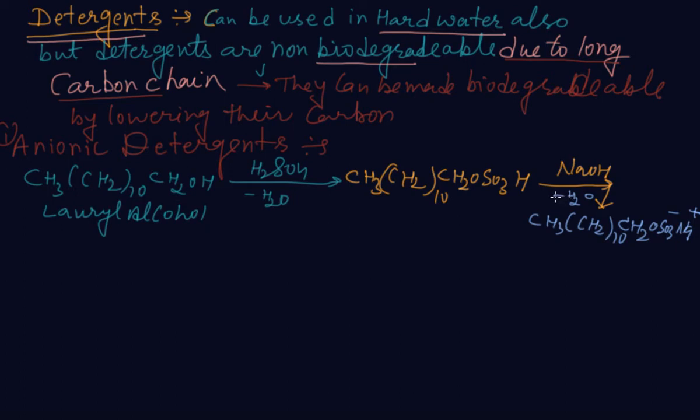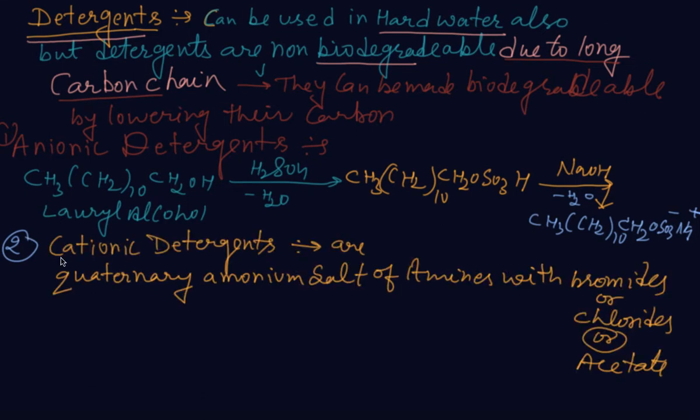Anionic detergents are the sodium salt of sulfonated long chain alcohols or hydrocarbons. Now next, second is cationic detergents. Cationic detergents are the quaternary ammonium salt of amines with maybe bromide or chloride or acetate. You just add 4 carbon atoms. So this formula is coming CH3(CH2)15 and then attach with nitrogen and quaternary salt you have made of the amines with the bromides.